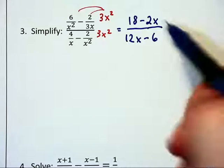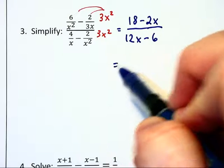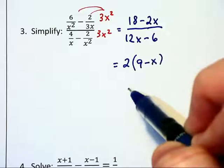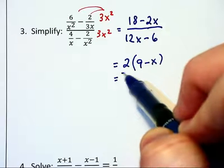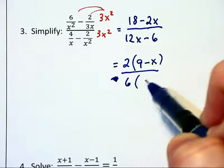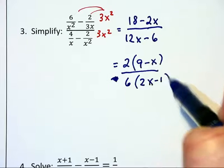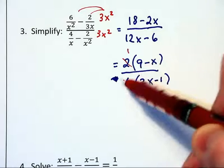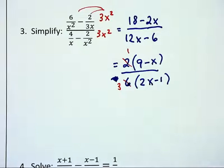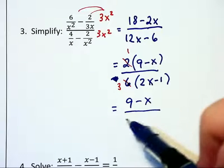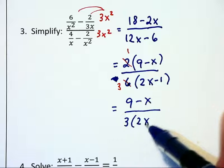Let's take the numerator and factor out a 2. That will give us 2 times 9 minus x, and down below we can factor out a 6. 6 times 2x minus 1. We can reduce the 2 and the 6 to 1 third, and then write this as 9 minus x over 3 times 2x minus 1.